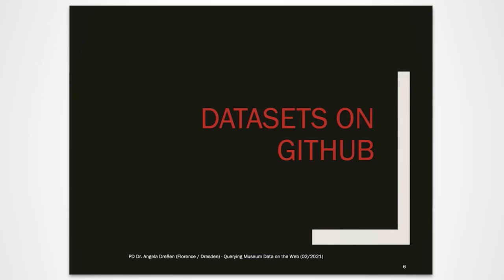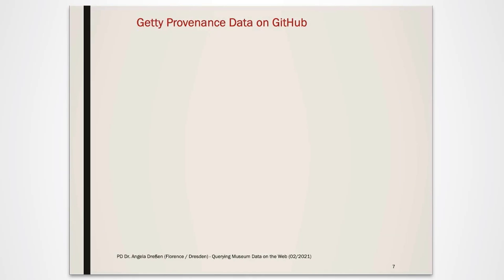Let us first look at datasets on GitHub. GitHub is a development platform used by many cultural institutions to store datasets and to host and share code for projects. Many bigger museums or other cultural heritage institutions store their data here in either one large file or in separate files under different entries. These datasets are updated periodically in order to give an up-to-date impression of the museum's holdings.